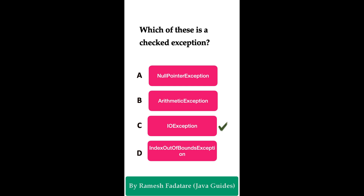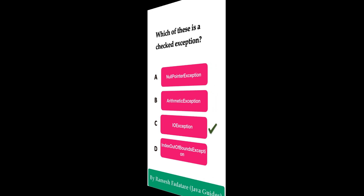The correct answer is Option C: IOException. In Java, IOException is a built-in checked exception. Checked exceptions need to be either caught or declared in a method signature using the throws keyword.